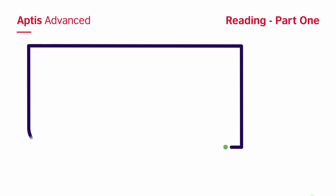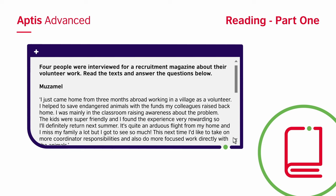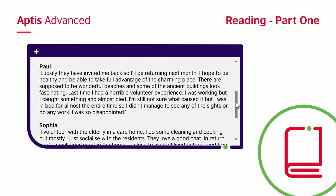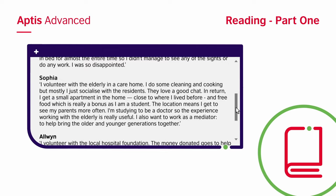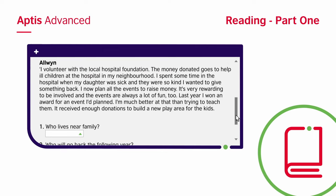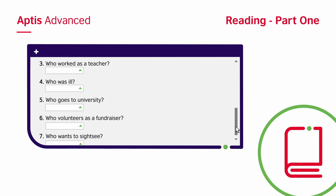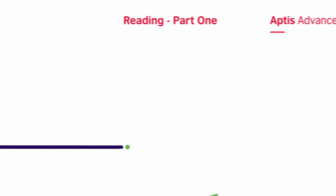The first part tests your ability to read and understand short texts. You will read the opinions of four people on the same topic, then read seven statements and decide which person's opinion matches each statement. Read all four opinions before trying to answer the questions. Remember, the same person can be used for more than one answer.